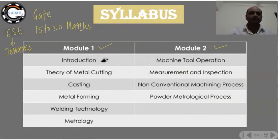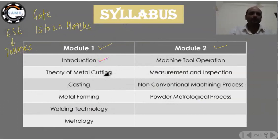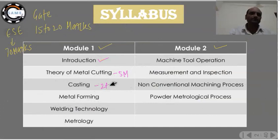The introduction part is also important — you should know this. The theory of metal cutting covers around 5 marks in GATE, and casting covers around 2 to 3 marks. Metal forming is also very important, covering around 4 marks.